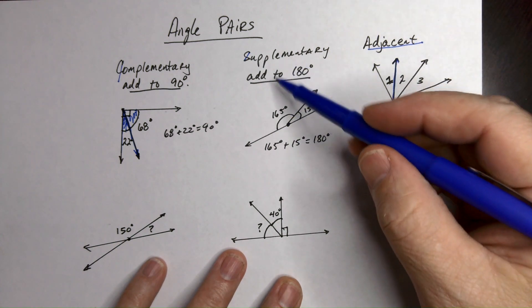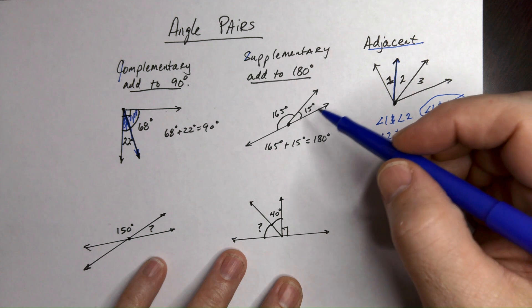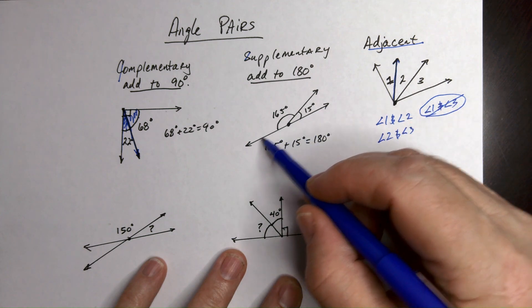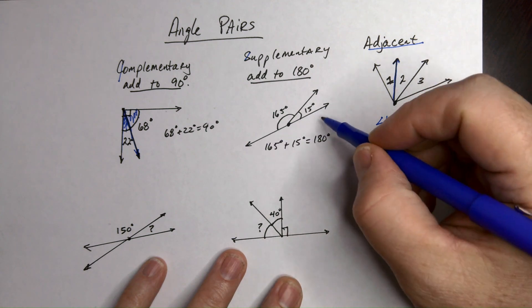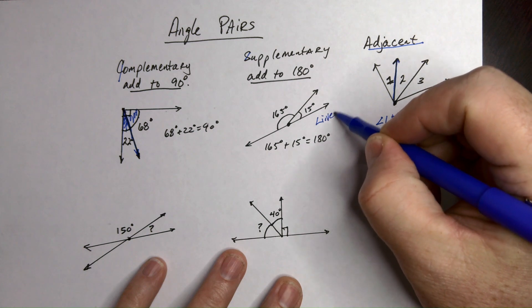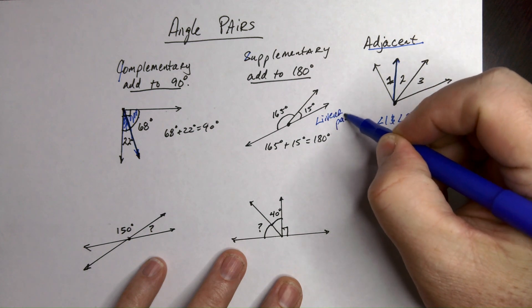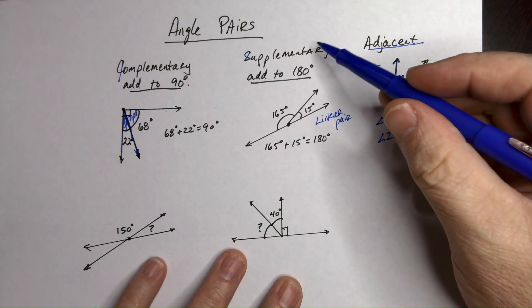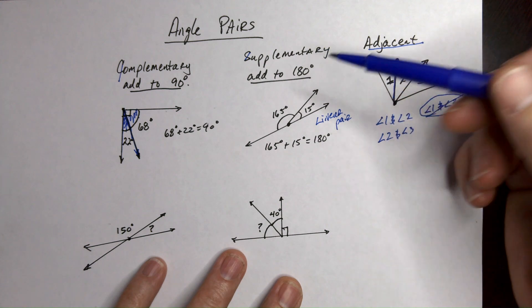All right, back to supplementary. Supplementary are two angles again that add up to 180. So 165 and 15. This is a linear pair because together they form a line. You see that? Linear pair is another name for supplementary.